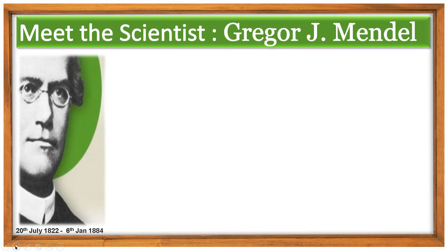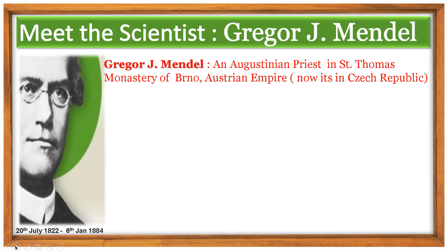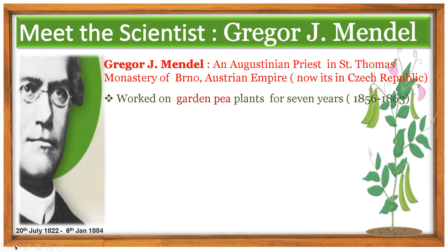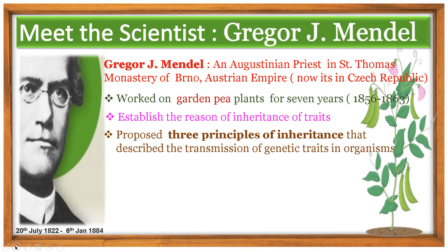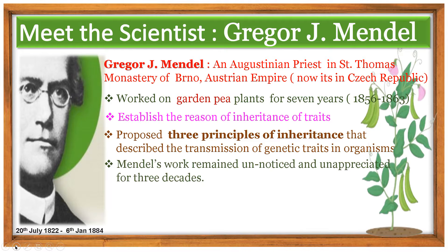Gregor John Mendel was born in the Austrian Empire. He was an Augustinian priest in St. Thomas' monastery of Brno. He worked on the garden pea plant for seven years. He was the first person to establish the reason for inheritance of traits. He also proposed three principles of inheritance that describe the transmission of genetic traits in organisms. Unfortunately, his work remained unnoticed and unappreciated for more than three decades.